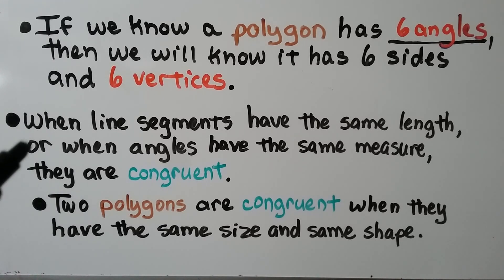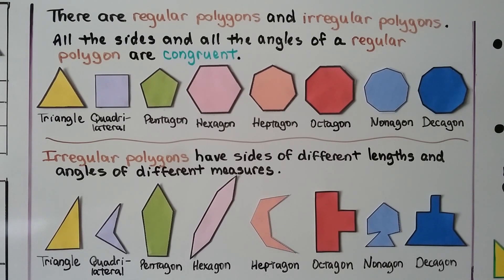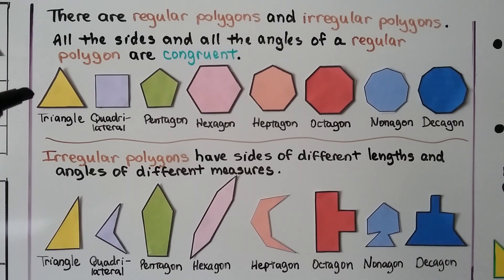When line segments have the same length, or when angles have the same measure, they are congruent. Two polygons are congruent when they have the same size and shape. There are regular polygons and irregular polygons.